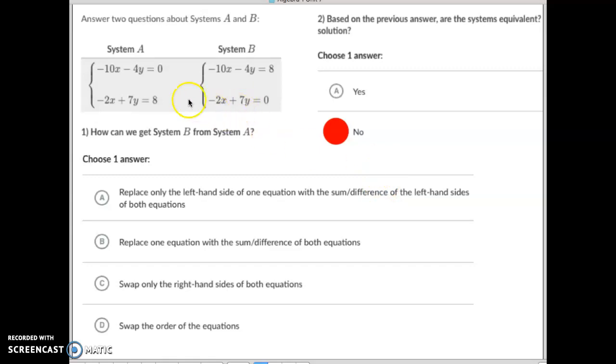Now, with that being said, they took and they flip-flopped the right side of this equation. So did they, A, replace only the left-hand side of one equation with the sum or difference of the left-hand side? They didn't do anything on the left side, so it's not that one. Did they replace one equation with the sum difference of both equations? No.